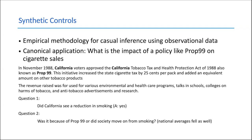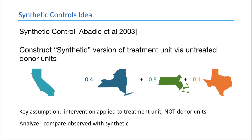The idea behind synthetic controls is: imagine the time series of California per capita smoking. The insight from Alberto was that you can approximate that time series using similar time series from the other 49 states. You construct a synthetic version of California as a combination of other states — for example, California might be 40% New York, 50% Massachusetts, and 10% Texas.